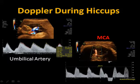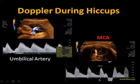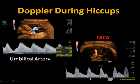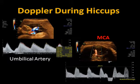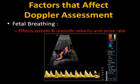For example, when there were hiccups, you can see a dropout in the waveform — you don't want to call that decreased flow in the umbilical artery. The baby had a hiccup, and you can see it reflected in all the waveforms, even the MCA. So be aware that breathing and hiccups can affect what you're seeing on your Doppler.